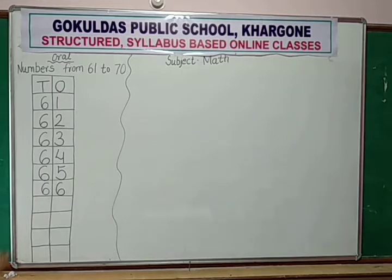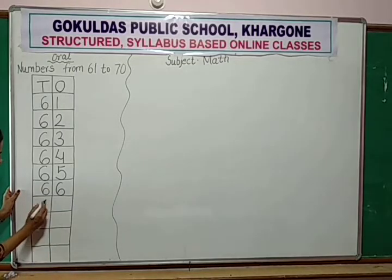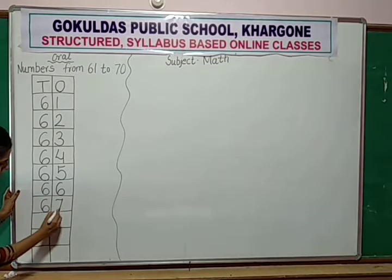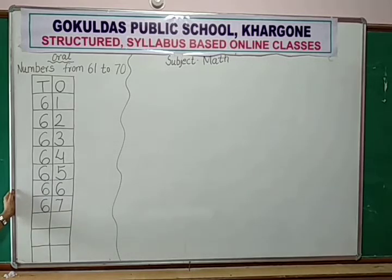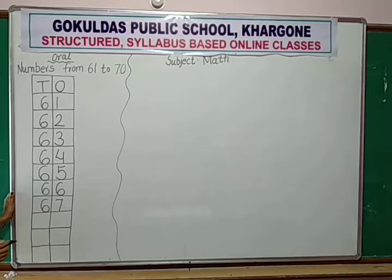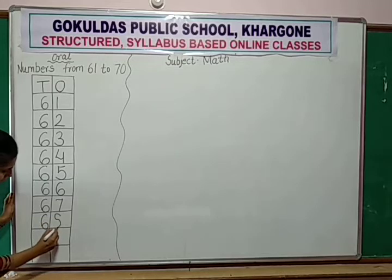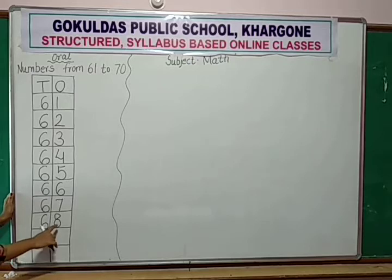Now after 66, 67 will come. So 6, 7, 67. Now after 67, which number will come? After 67, 68 will come. And how to write 68? 6, 8, 68.